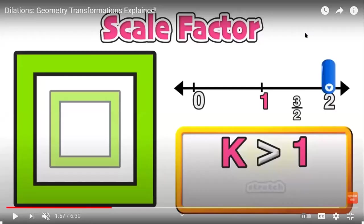The scale factor is very important when you want to draw the dilation of any figure. On the number line, we have 0, 1, and 2. If the scale factor k is greater than 1, we are going to stretch the figure — making it an enlargement. But if the scale factor is less than 1, such as one-half or one-third, we are going to shrink or minimize the figure.